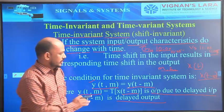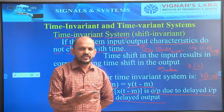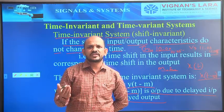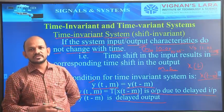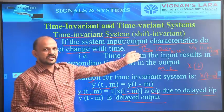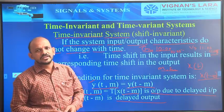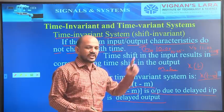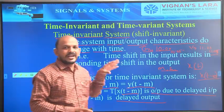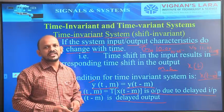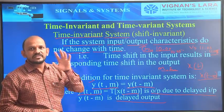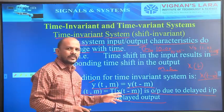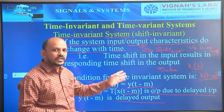If anyone asks what a time invariant system is, simply say: the system whose input-output characteristics do not change with time. If there is any time shift at the input side, the same time shift will occur at the output side. The condition for a time invariant system is y(t, m) = y(t − m). If any system satisfies this mathematical equation, it is termed a time invariant system.